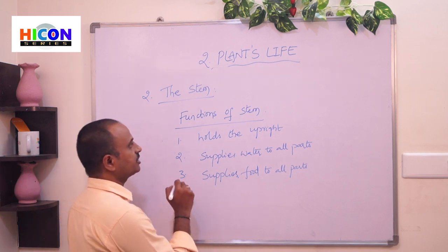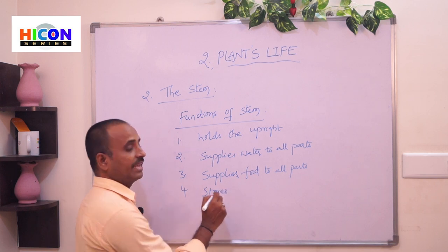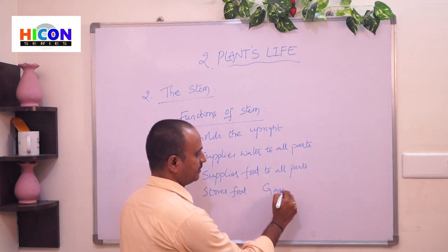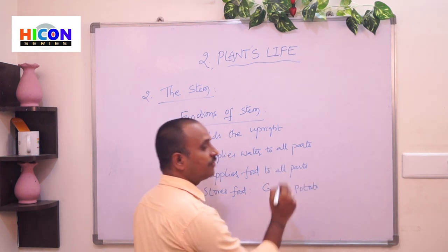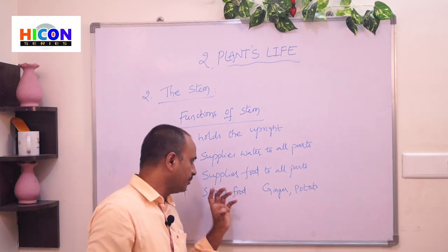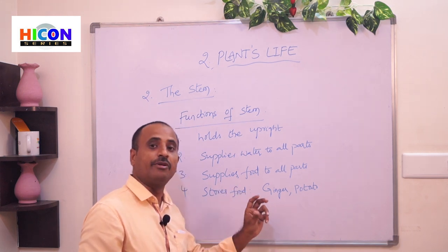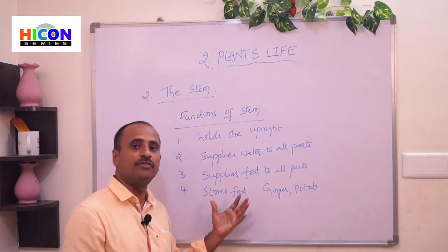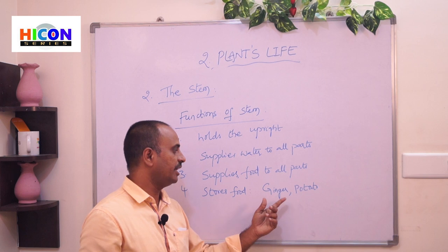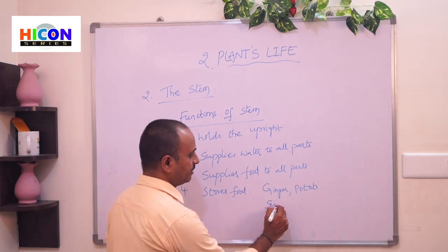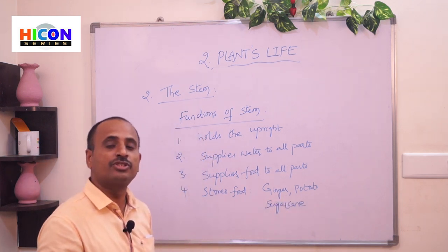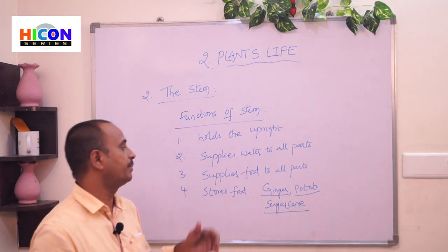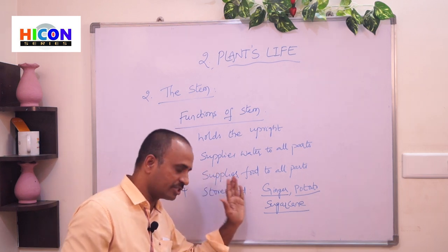Another function: some stems store food in them. Just like roots, in some plants stems also store food. Examples are ginger, potato, and sugarcane. The stems of these plants become very thick and bulbous because they store food. Sugarcane also stores food and water in the stem. We can eat the stem of ginger, potato, and sugarcane as food.